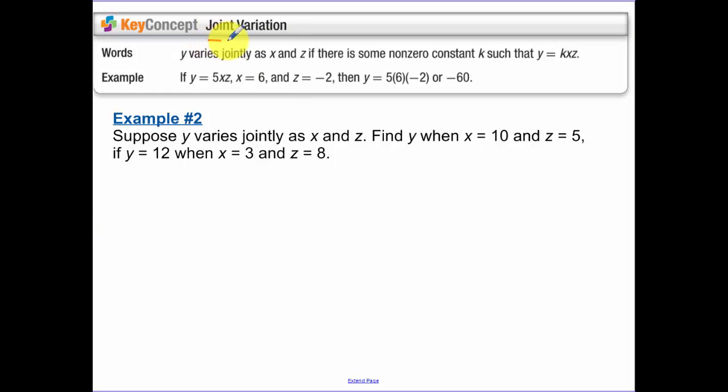Joint variation. Make sure you write down joint variation and make sure you're writing down the words: y varies jointly as x and z. If we have some constant where x and z, now it's varying jointly, so they're both in the numerator. So y varies jointly as x and z. So you have some constant of variation that's telling you how they're varying.